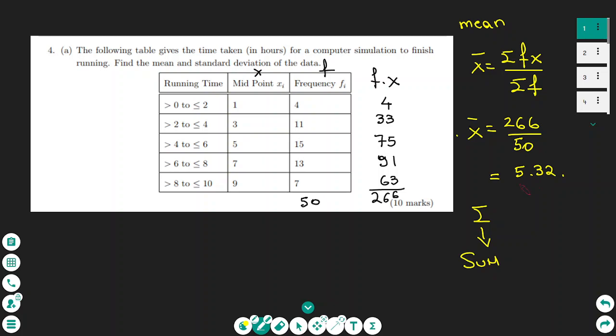This represents the average time of a computer simulation to finish running. This is the average time, and the average is in the third interval class.